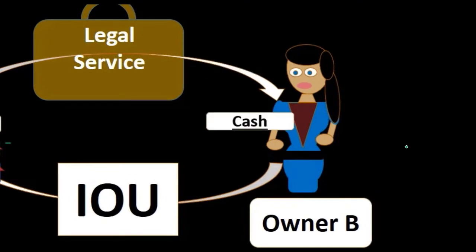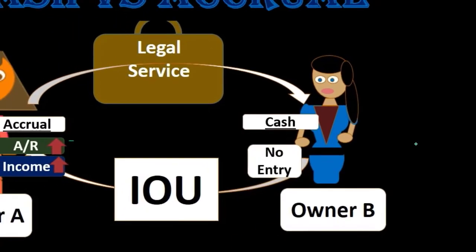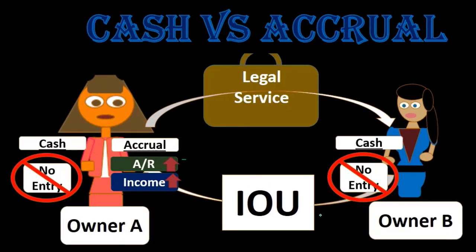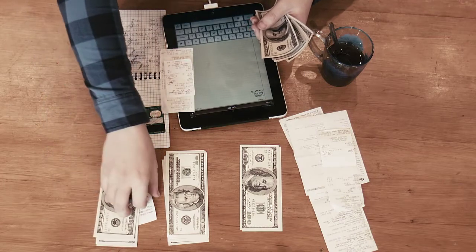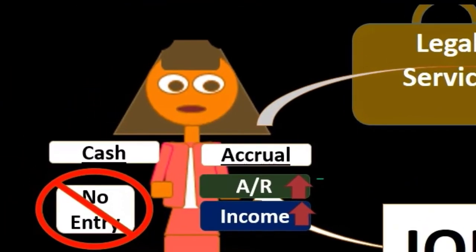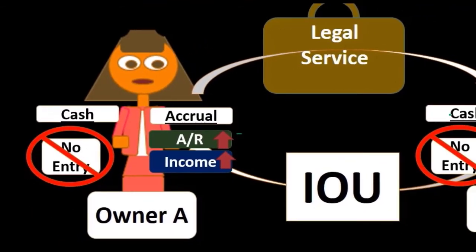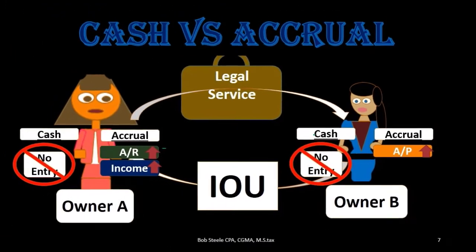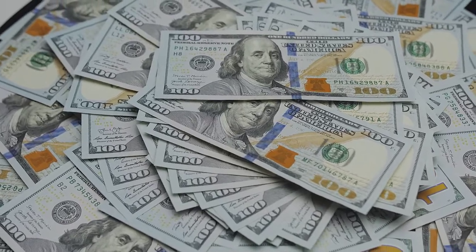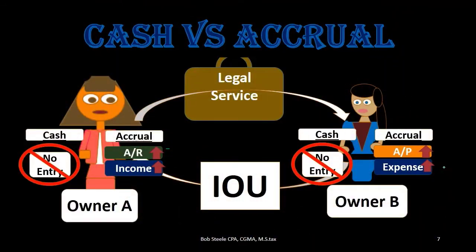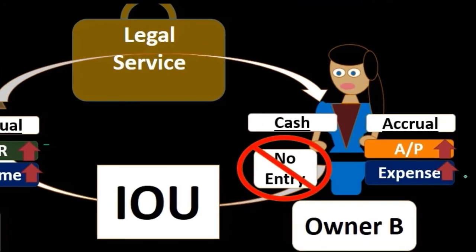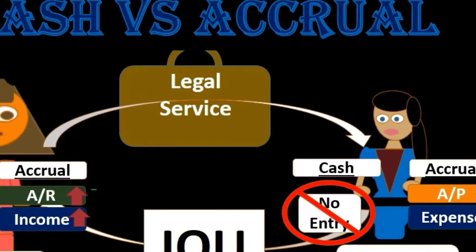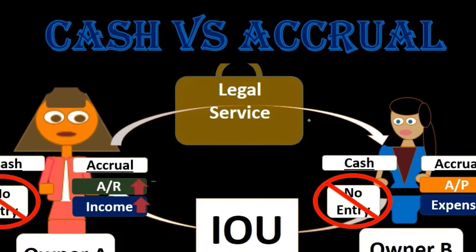From owner B's side in this transaction, under a cash method, no journal entry takes place because no cash has changed. The legal services are being received, but cash hasn't left the business, so it hasn't triggered expense recognition. Under an accrual method, accounts payable — a liability — increases, representing the fact that money is owed for work that has been done, and the related expense is recorded at the point the services were incurred.